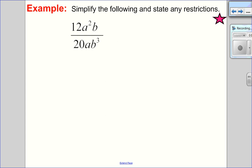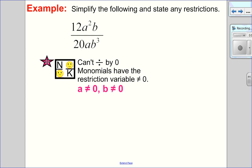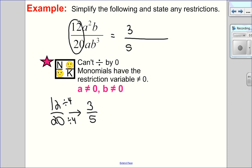Looking at our example, both a and b can't be 0 since we have monomials. For the numbers: 12 over 20, common factor of 4, gives 3 over 5. For the a's: a squared divided by a leaves one a on top. For the b's: more b's in the denominator, 3 minus 1 gives b squared on the bottom. So in lowest terms: 3a over 5b squared, where a can't be 0 and b can't be 0.